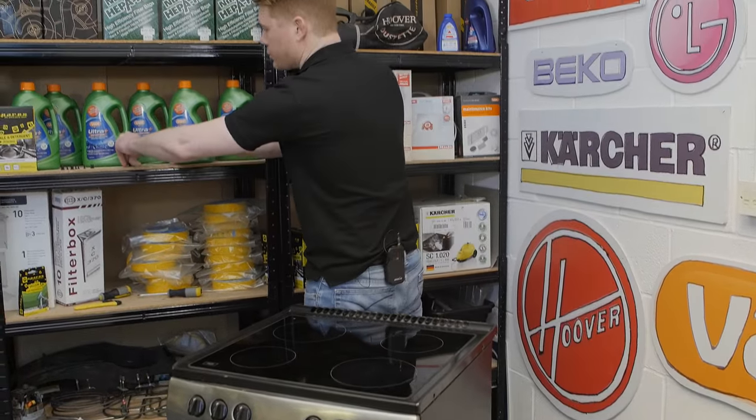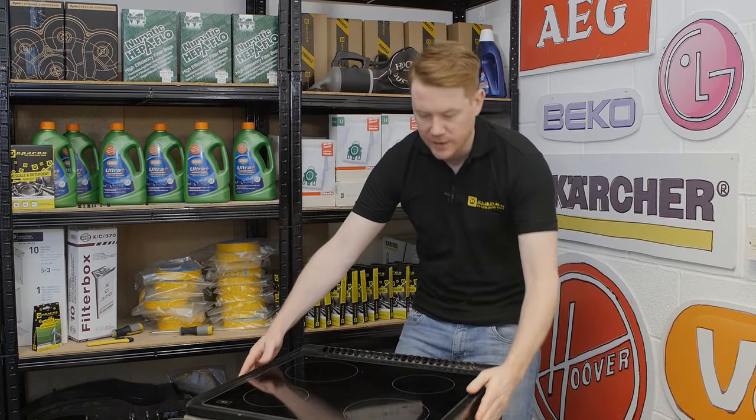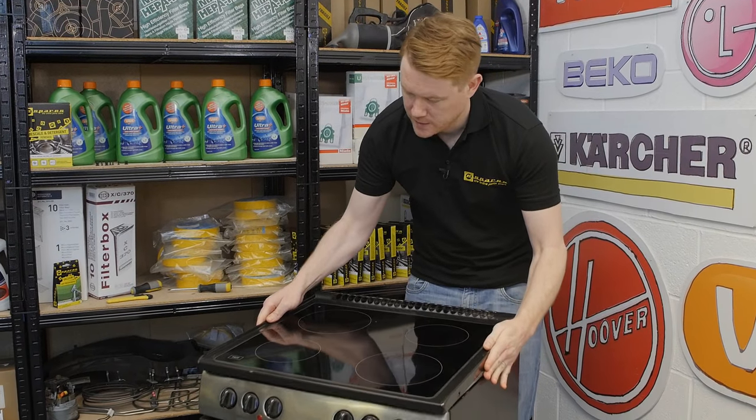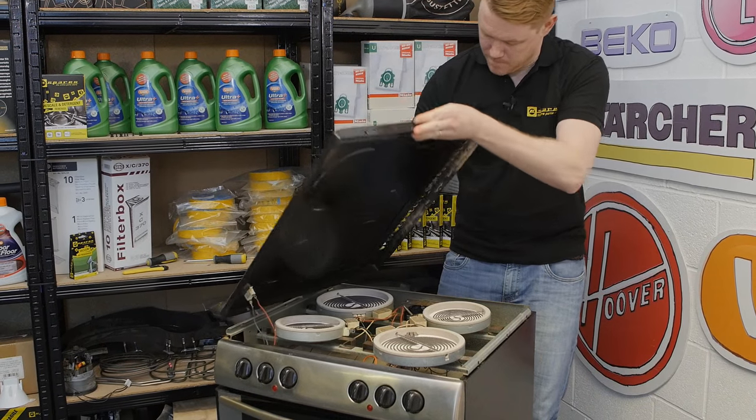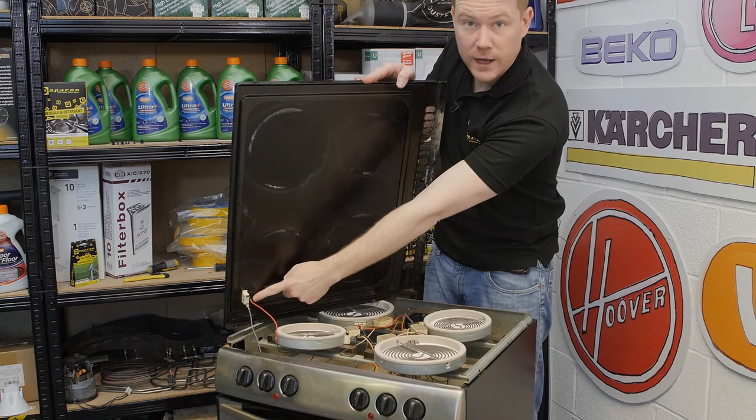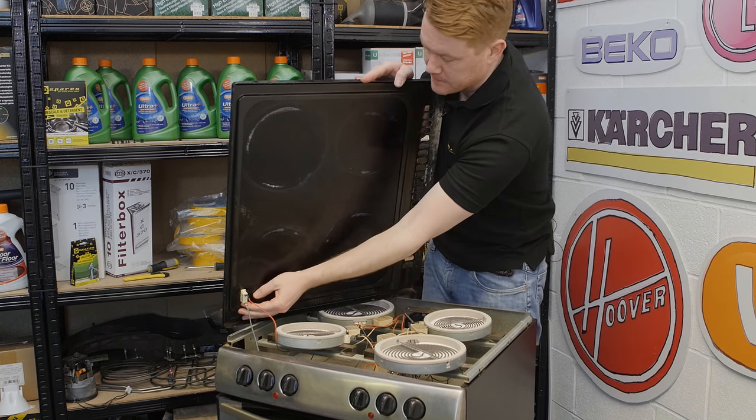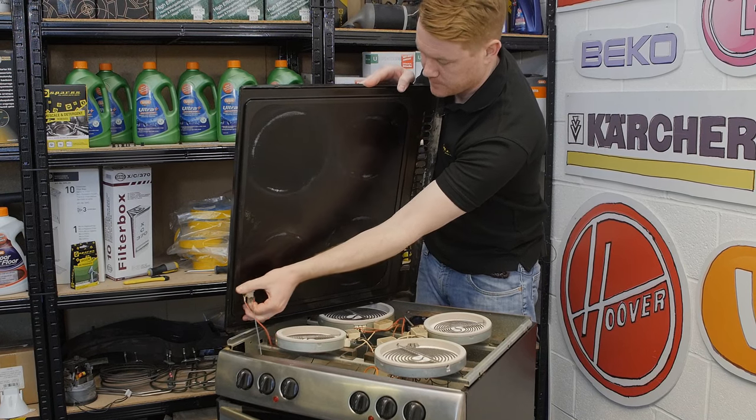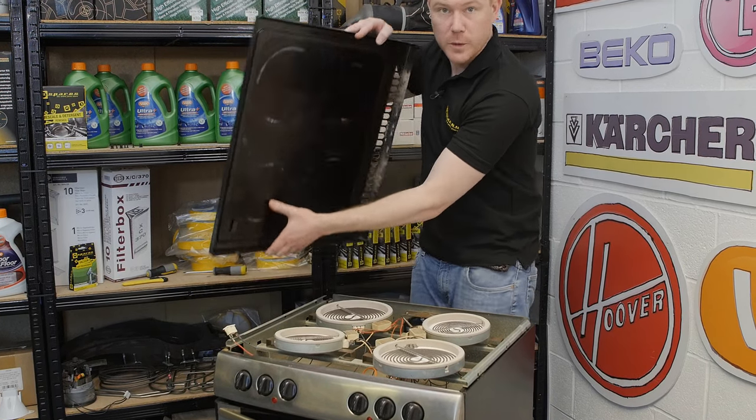With all four screws and rivets removed I can now lift up the hob top, but being careful as I do as the warning light is still attached underneath. This simply slips out and then I can remove the hob top completely.